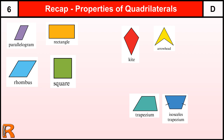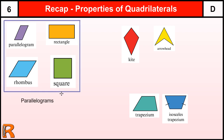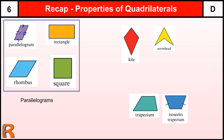You might think parallelograms are just this standard tilted shape, but in fact all four of these special shapes are parallelograms. The only thing that defines a parallelogram is that the opposite sides are parallel. We denote parallel sides with arrows, and the matching number of arrows indicates which sides are parallel. A rectangle has this property as well, and the same is true for a rhombus and a square.